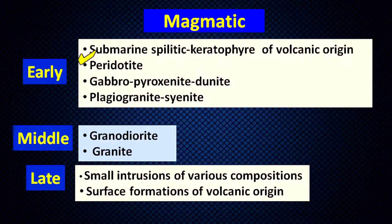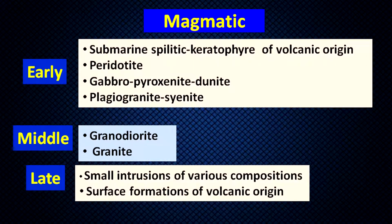Peridotite is a rock, and during formation of peridotitic rocks, mineral deposits are also formed. Gabropyroxenite and dunite are also rock associations; during the evolution of gabropyroxenite and dunite rocks, ore deposits are also formed. Plagiogranite and cyanite are also rock types whose evolution is associated with the formation of ore deposits.